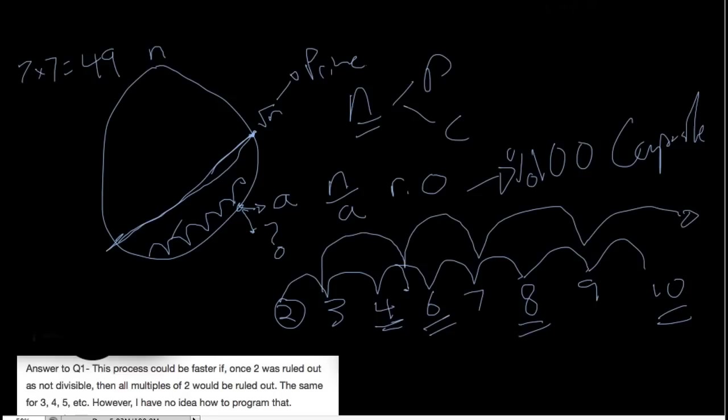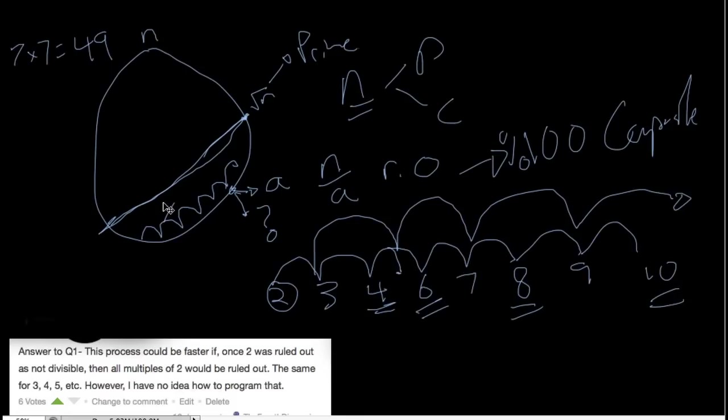So one category of questions, they all try to reduce this space. So if we eliminate all the even numbers, now the check space, instead of being up to the square root of n, is the square root of n divided by 2. And we can find other patterns in composite numbers to try to make this even smaller.